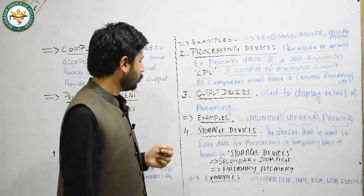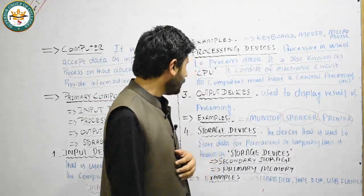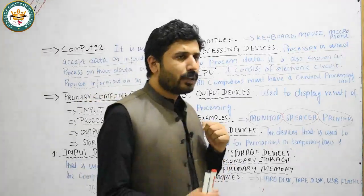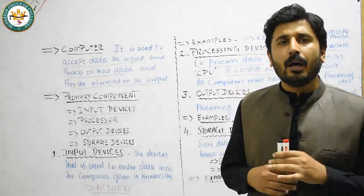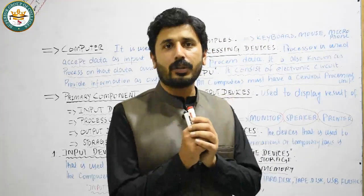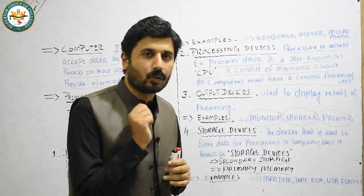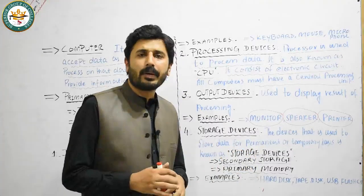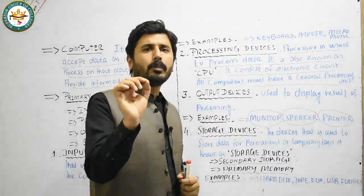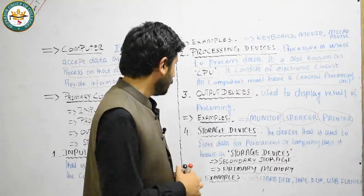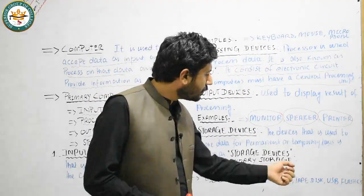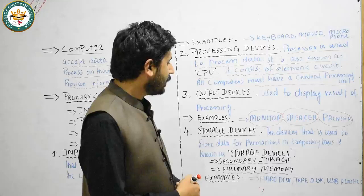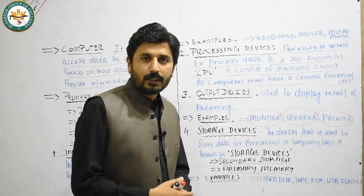There are two types of storage devices: secondary storage devices, where data is stored on a permanent basis, and primary memory, where data is stored for a limited time on a temporary basis. Examples include hard disk, tape disk, and USB flash drives — all devices on which data is stored on a permanent basis.